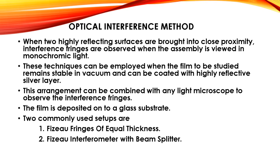The next method for thickness measurement is the optical interference method. When two highly reflecting surfaces are brought into close proximity, interference fringes are observed when viewed in monochromatic light. This technique can be employed when the film remains stable in vacuum and can be coated with a highly reflective silver layer. This arrangement can be combined with any light microscope to observe the interference fringes. The film is deposited onto a glass substrate. There are two commonly used setups: Fizeau fringes of equal thickness, and the Fizeau interferometer with beam splitter.